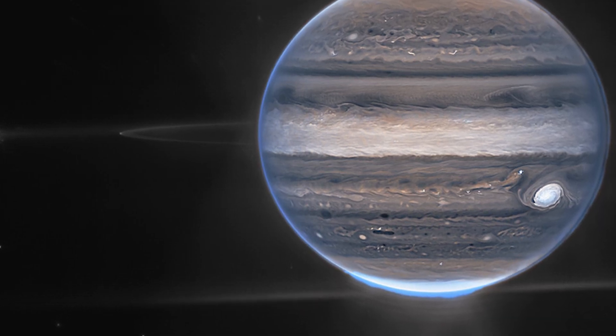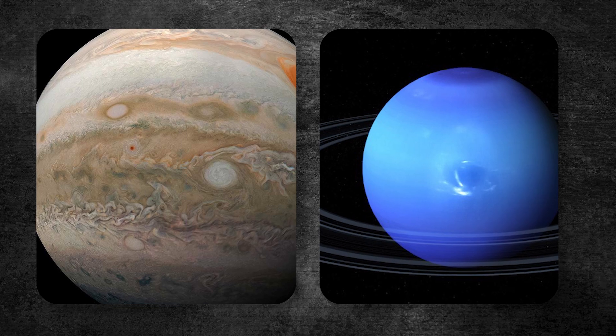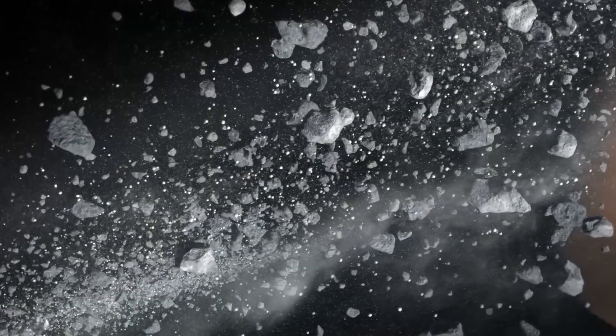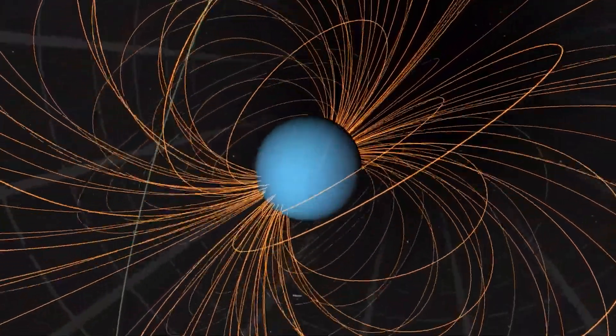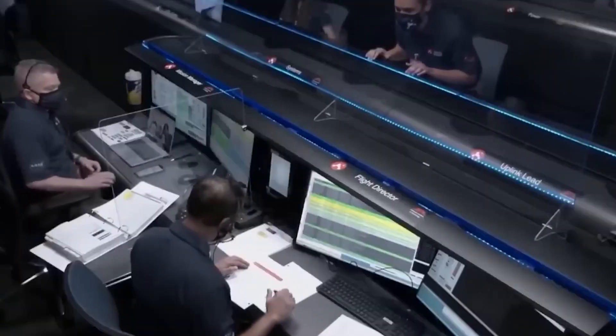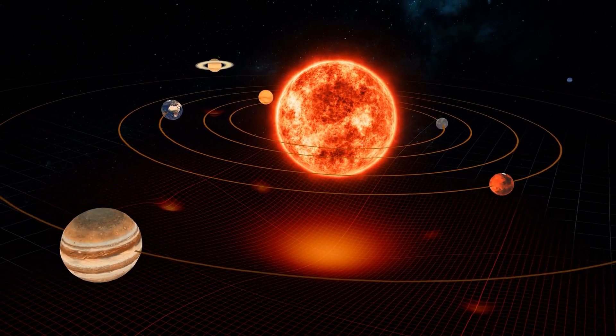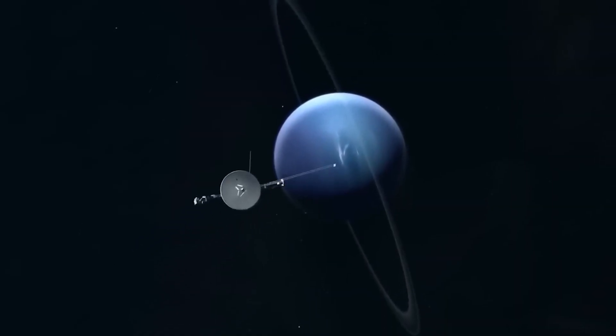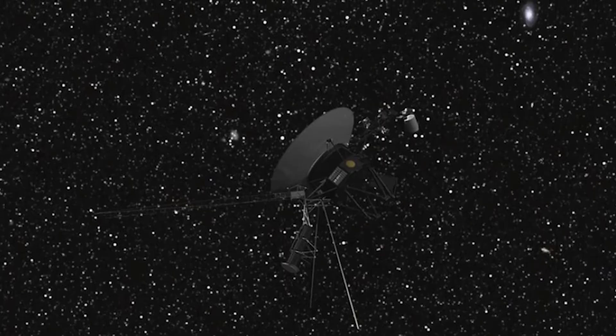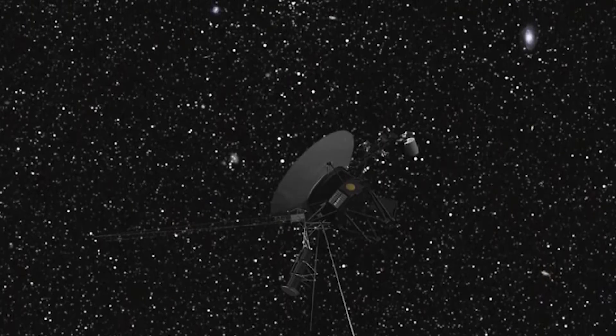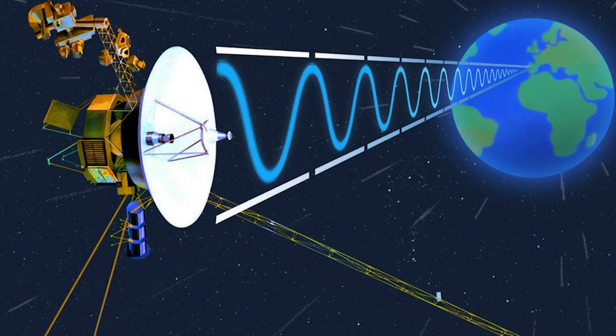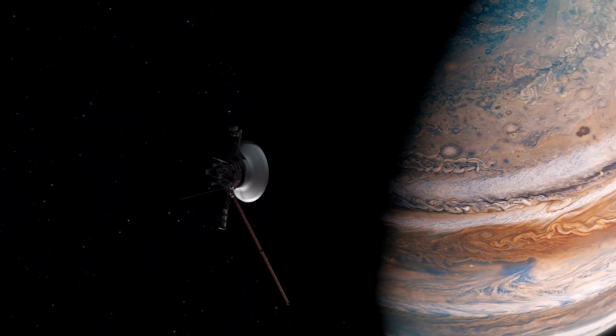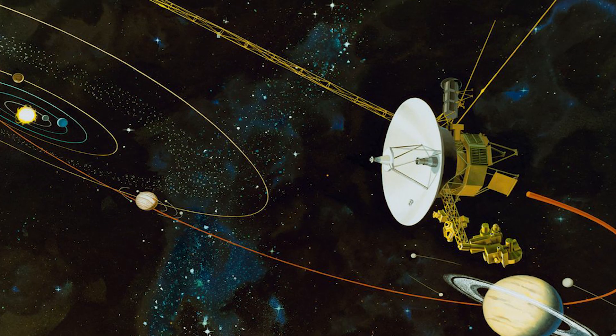Neptune's moon Triton was discovered to have geysers, which means its surface might still be geologically active. The Voyagers also found new moons and faint ring systems, like the thin rings around Jupiter and Neptune. These discoveries gave us a deeper understanding of how planets and their rings are formed. In the end, the Voyager mission is not just about the scientific discoveries. It represents humanity's constant journey to learn more about the universe.